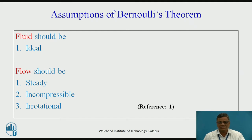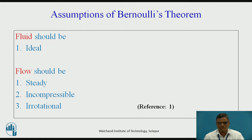Now firstly we look at the assumptions of Bernoulli's Theorem. The assumptions have two parts: one associated with the fluid and the second associated with the flow. In case of the fluid, the fluid should be ideal. The ideal fluid is the fluid of which the viscosity is equal to zero. All existing fluids have viscosity and are called real fluids. If a fluid has zero viscosity, it is called an ideal fluid.